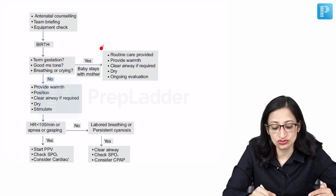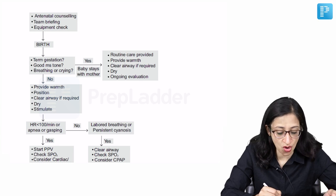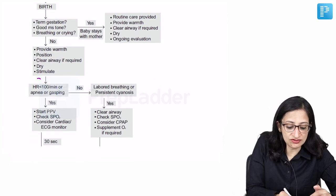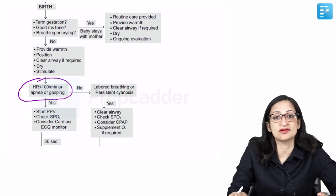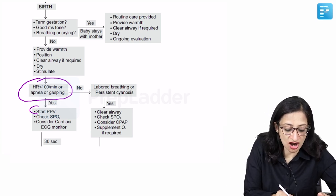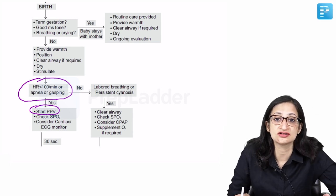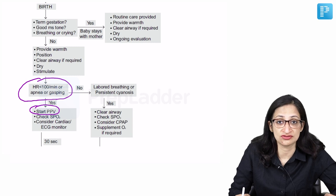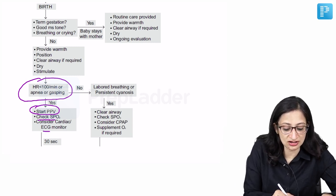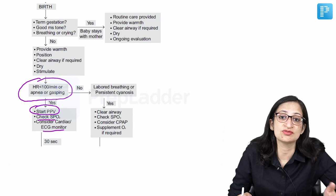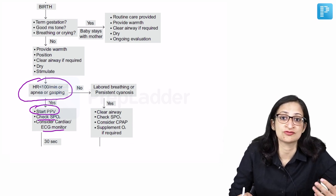We look at whether it was term gestation, good muscle tone, breathing or crying. If yes, then routine care is provided. But if no, then we provide warmth, position, clear airway if required, dry and stimulate. And then we assess. So, here comes this question. If the baby's heart rate is less than 100 per minute or the baby is having apnea, that means not breathing or gasping like this, then what do you do? You have to start positive pressure ventilation, and positive pressure ventilation during neonatal resuscitation we know is provided using self-inflating bag and a mask. Basically in other words you start bag and mask ventilation, check the saturation of the baby and consider using a cardiac or ECG monitor. If despite that the baby does not improve you have to take ventilation corrective steps, and then even if the baby continues to have heart rate less than 60, then we move on to chest compression subsequently followed by injection adrenaline in a step-wise manner.